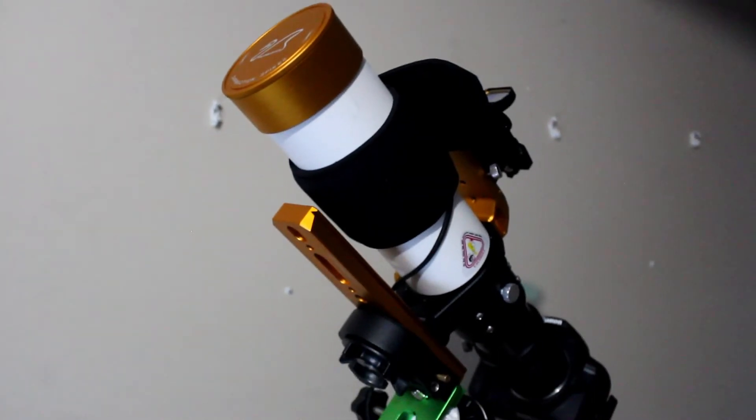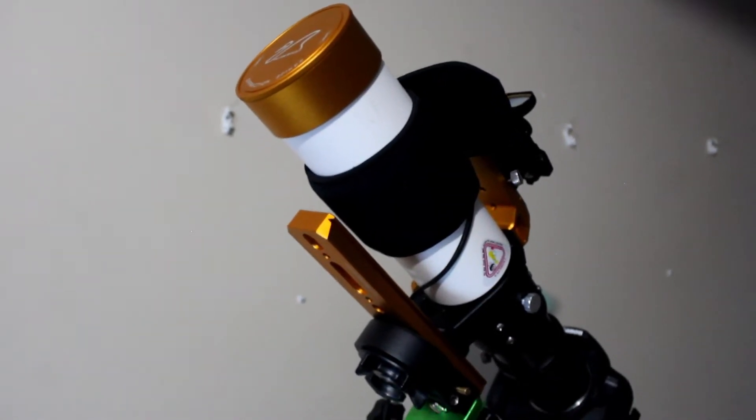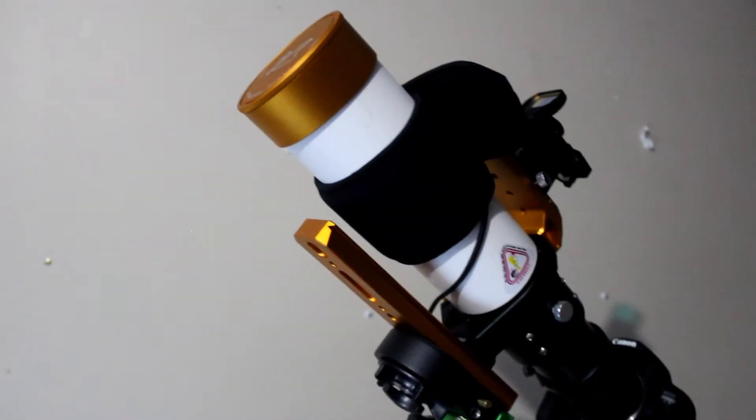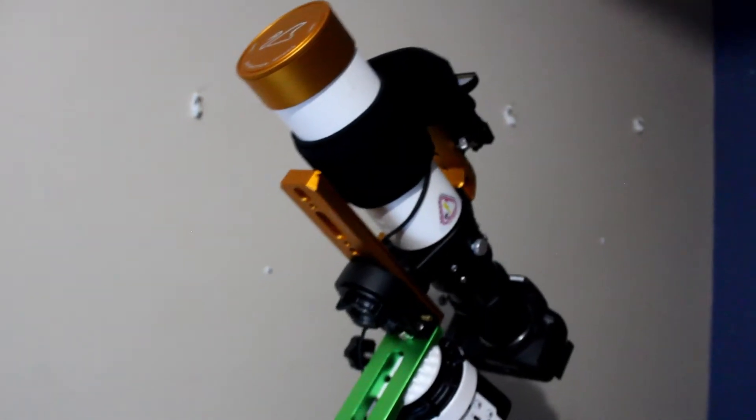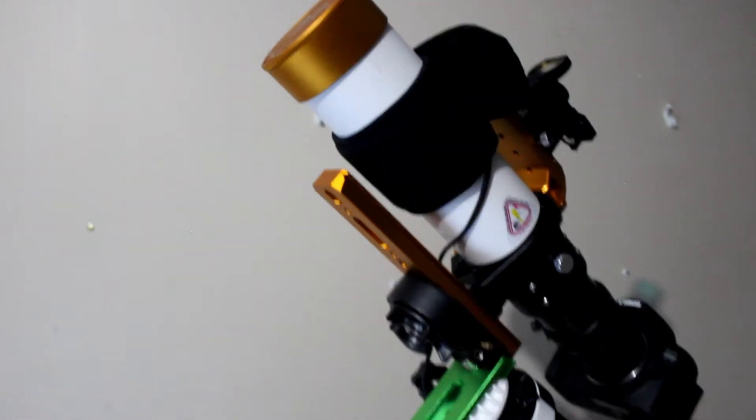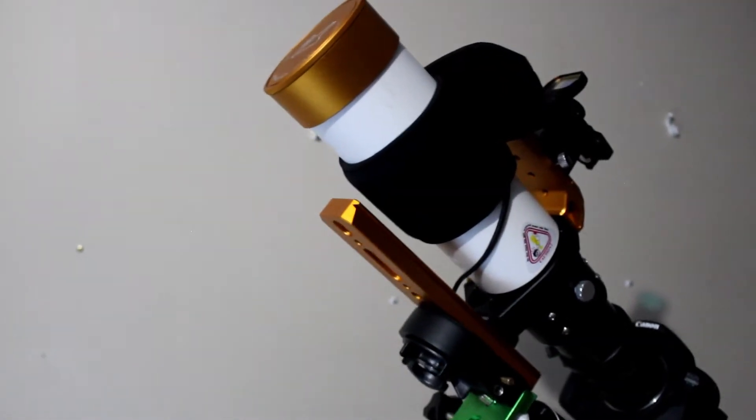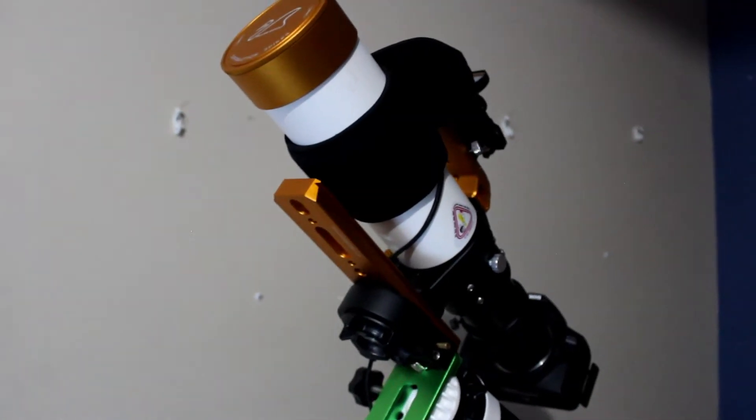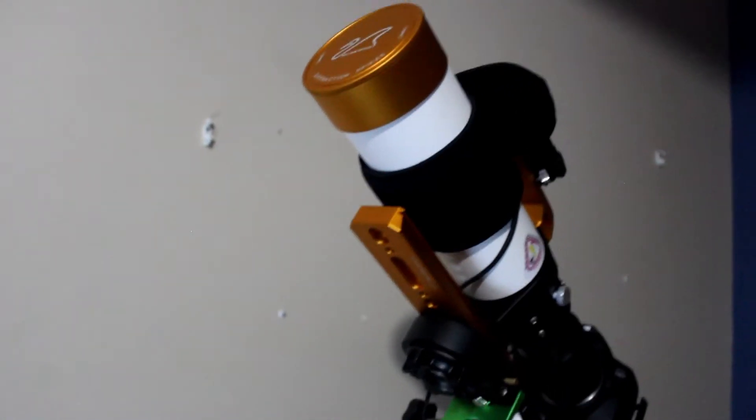The William Optics Xenostar 61 APO Refractor. 360mm of focal length. I love it. It fits in that nebula really good, such as the heart nebula. It fits in perfectly. Get that outer nebula too. It's awesome.